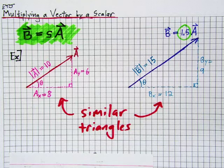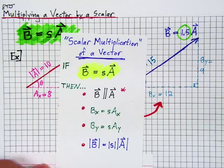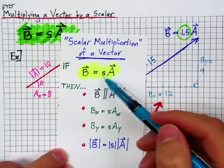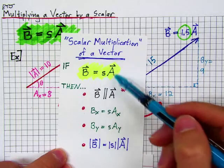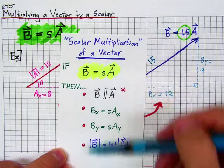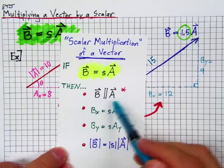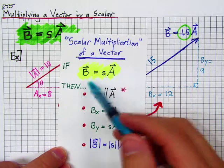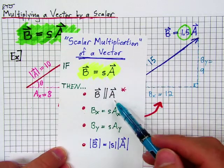So in summary, scalar multiplication of a vector. If vector b equals some scalar s times vector a, then that implies the following. B will be parallel to a. Those two vectors are parallel to each other, just scaled differently. Different lengths, different magnitudes, but parallel, same direction.